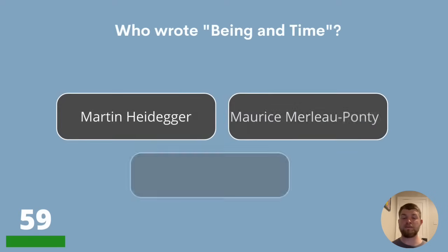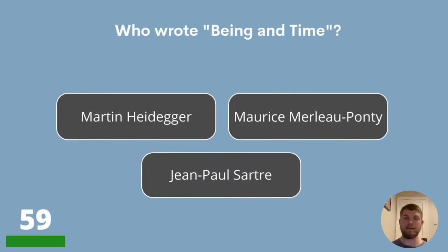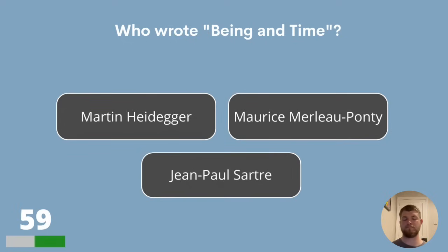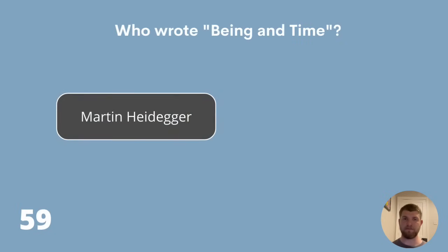Question 59. Who wrote Being and Time? Was it Martin Heidegger, Maurice Merleau-Ponty or Jean-Paul Sartre? The answer is Martin Heidegger.